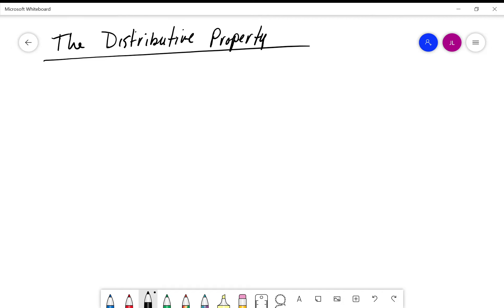The distributive property, or sometimes we may refer to it as the distributive property of multiplication over addition, basically allows us to write a product as a sum or a sum as a product. What I mean by this, let's take an example.